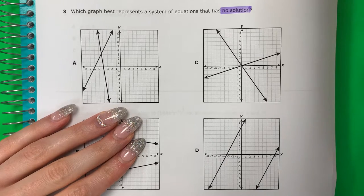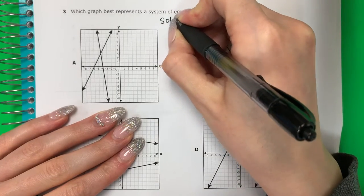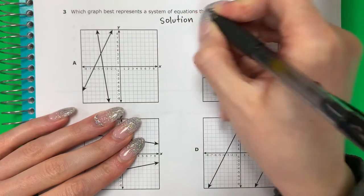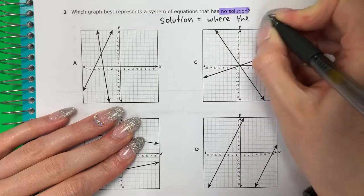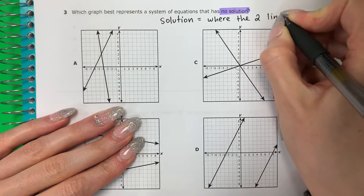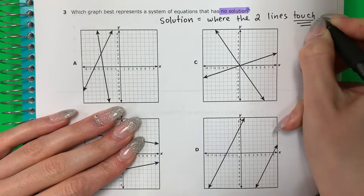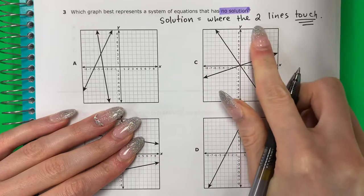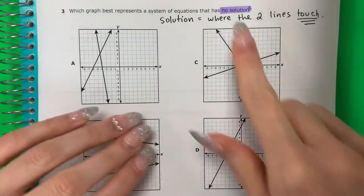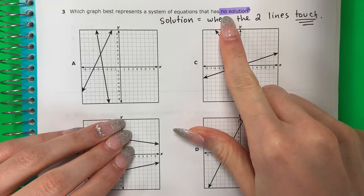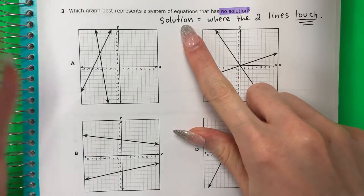La solución está donde las dos líneas tocan. Okay, so solution where the two lines touch. La solución está donde las dos líneas se tocan. So I want without a solution. Pero quiero sin solución. So if yes solution is yes touch, no solution means no touch.